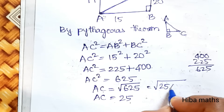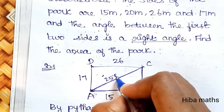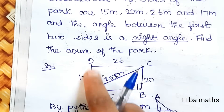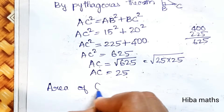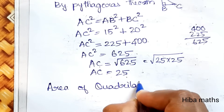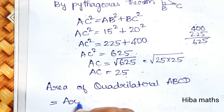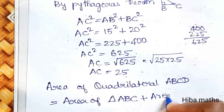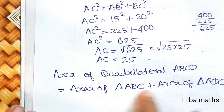So the diagonal AC is 25 meter. Now, area of quadrilateral ABCD is equal to area of triangle ABC plus area of triangle ADC.